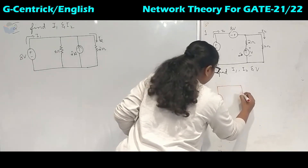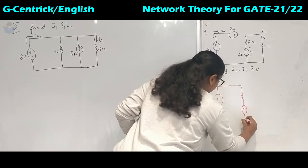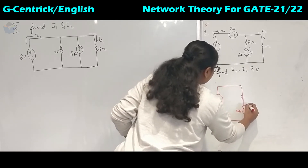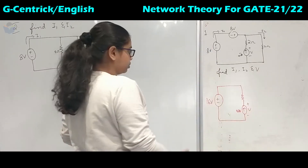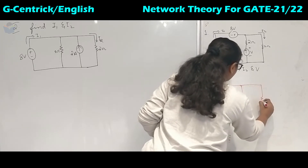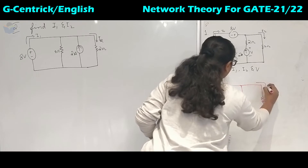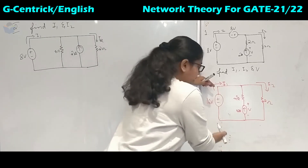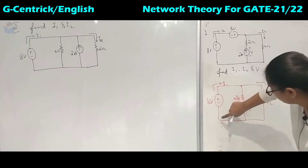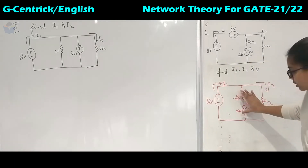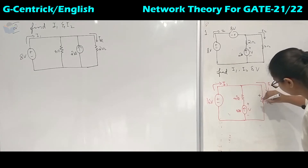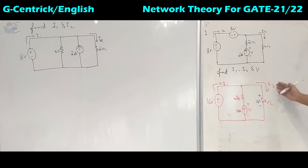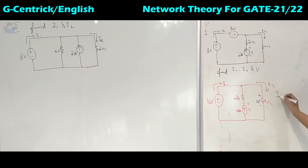This circuit has a current source of 2 amperes, and we are asked to calculate the voltage across it. There is 2 ohms here and 2 ohms here. In parallel, the voltage will be the same if there is no element present. So here it is 16 volts, and the same 16 volts appears across the other branches. We can find I2: it is 16 divided by 2, that is 8 amperes.